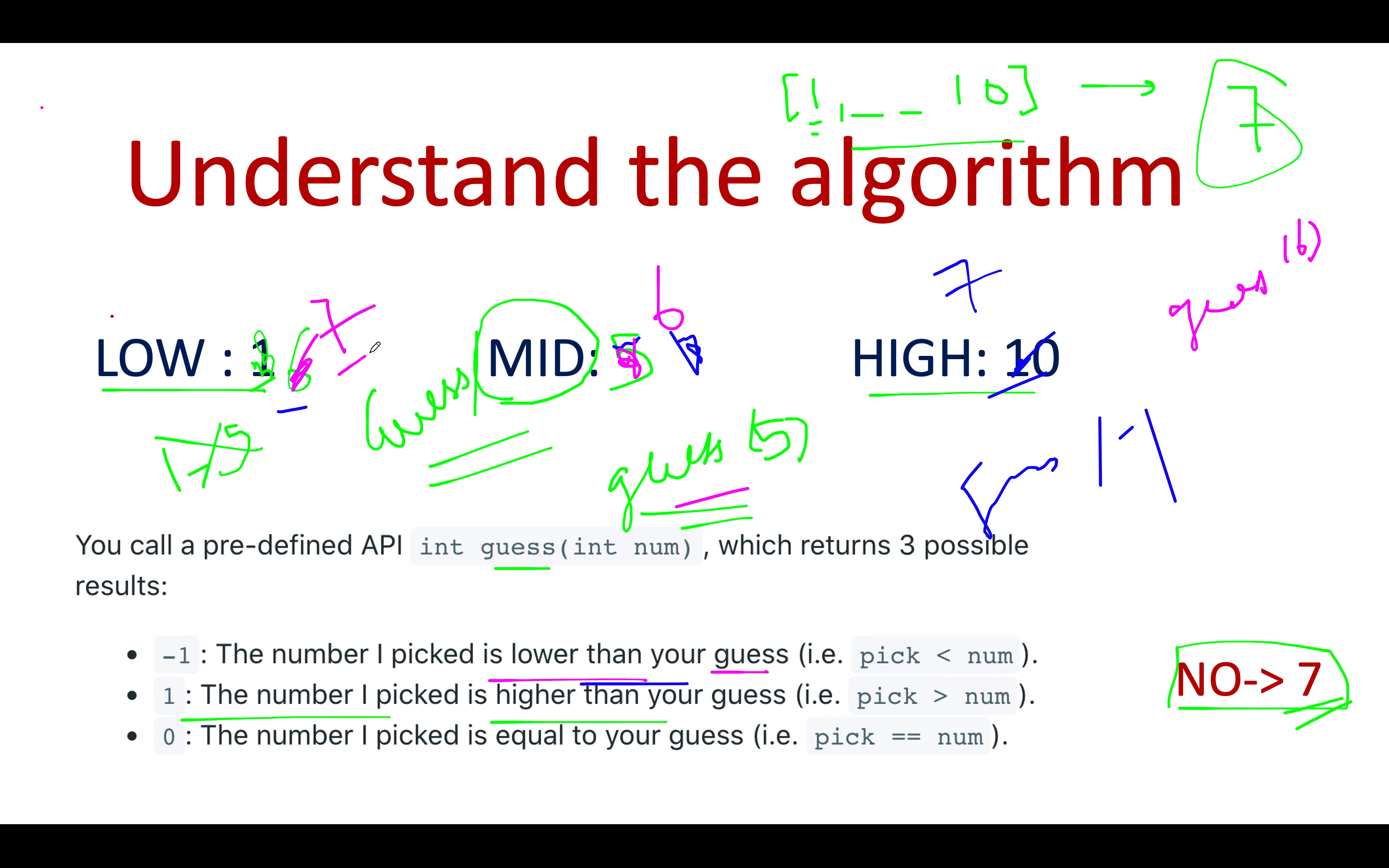So this gets updated to seven and let's perform the last iteration. Low is seven, high is seven. Mid also turns out to be seven and in the last step, we'll invoke guess of seven. Guess of seven will return us zero because it's a matching case. And we found the answer. The answer is seven because in that particular case, we'll get zero from our guess method. So as soon as the guess method returns zero, we will return our answer as the guessed value.